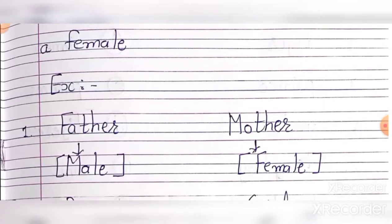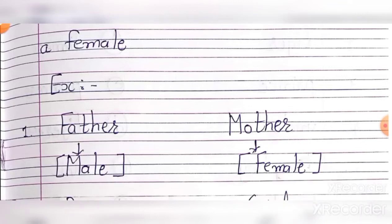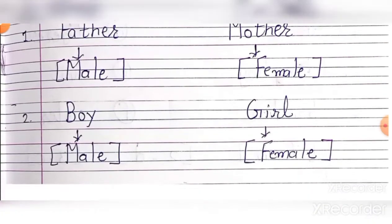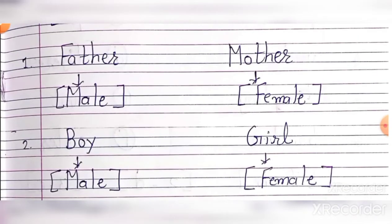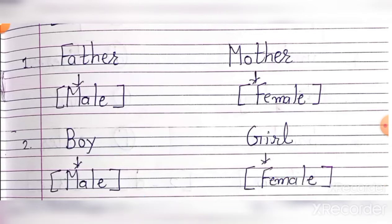For example, jaise father — toh father hai, woh male hai. Aur mother — woh female hai. Waise hi another example — boy hai, woh male hai. Aur girl hai, woh female hai. Right. Toh aagye uski exercise dekhte hain.